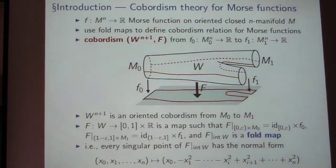And now, this kind of notion, this notion of cobordism, turns out to be an equivalence relation. So you can consider the corresponding cobordism group of Morse functions on closed n-manifolds. And the important question that arises is now how to study this.